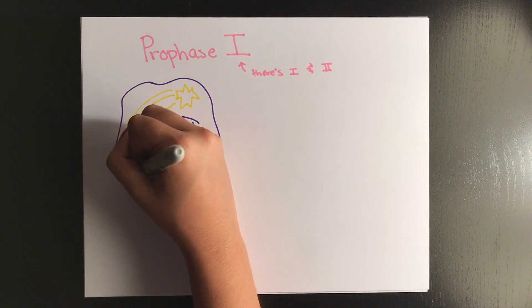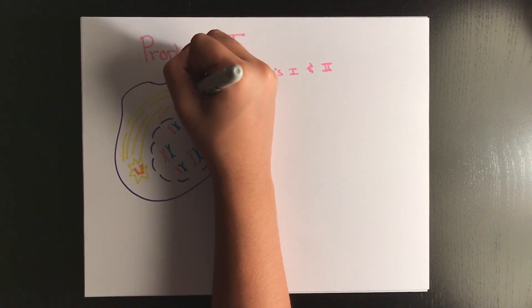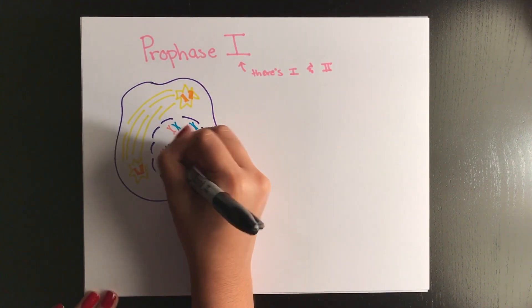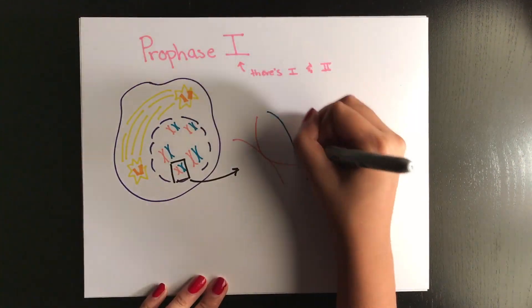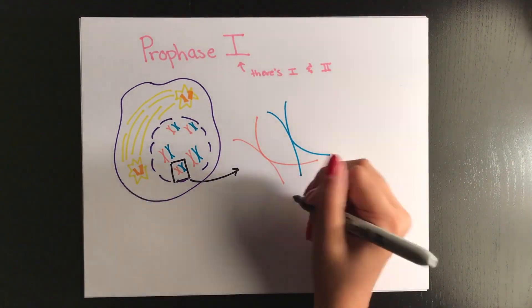Synapsis takes a really long time because you form these pairs of homologous pairs. This pair is made up of four chromatids. We call this pair a tetrad.